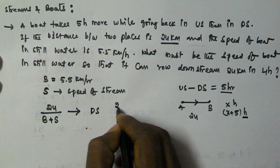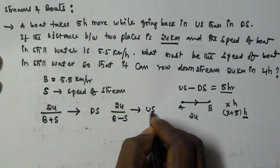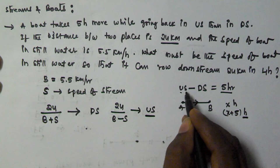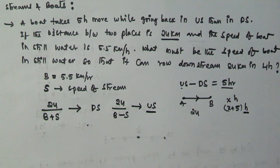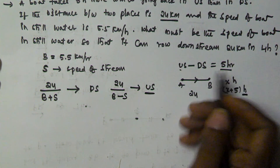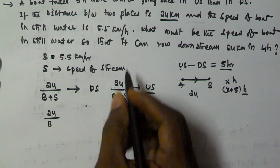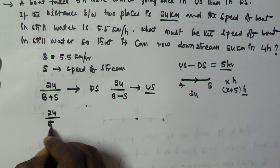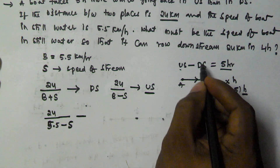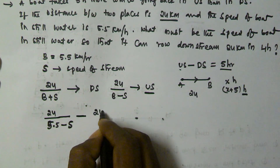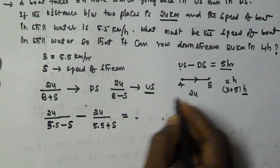And the time taken for upstream is 24 divided by b minus s. According to the given question, the time taken for upstream minus downstream equals 5 hours. So: 24 divided by (5.5 minus s) minus 24 divided by (5.5 plus s) equals 5 hours.